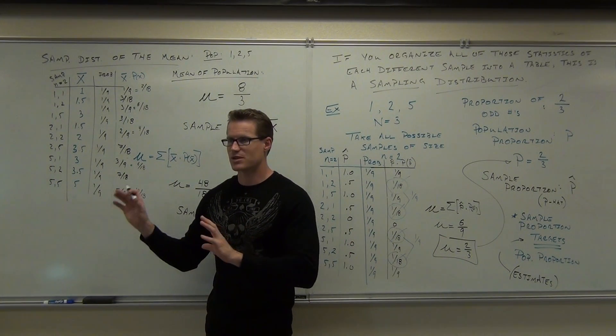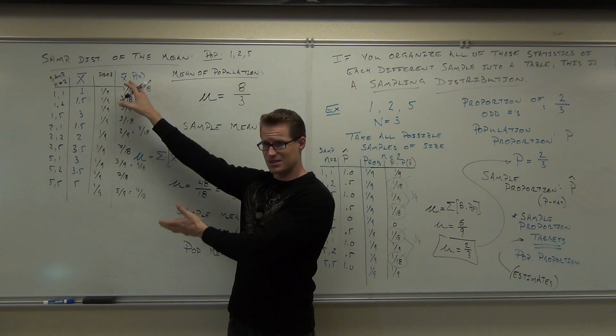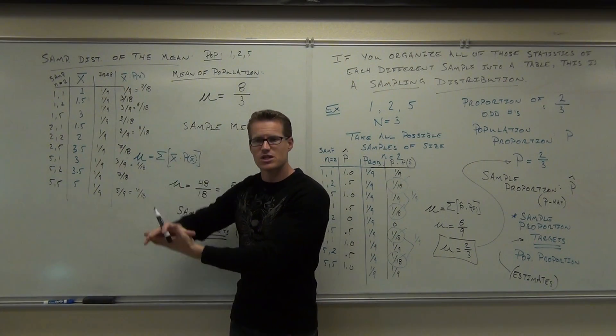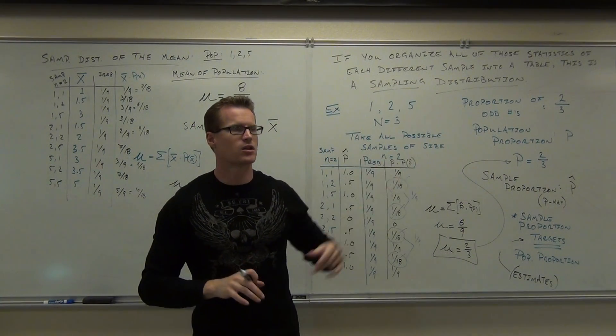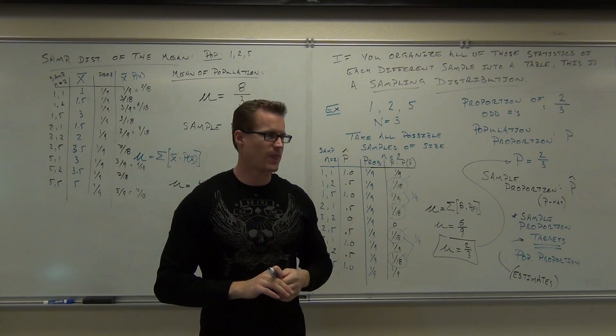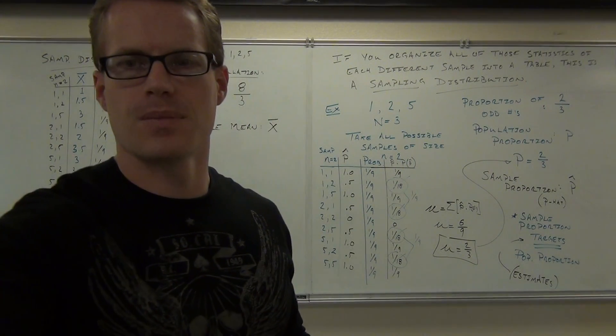Our section about sampling distributions was simply, you should know what a sampling distribution is. And then if we average them together, the average of those statistics will give us, or target, or estimate the population parameter. How many of you feel okay about our section here? Good. We'll wrap this up next time. Thank you.